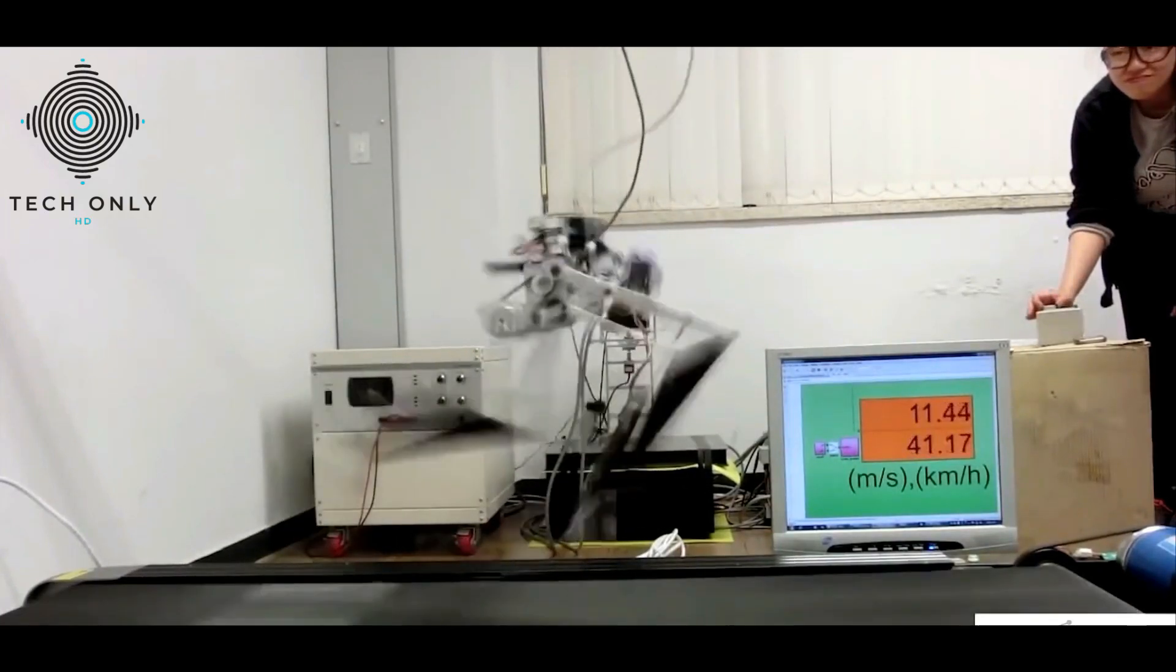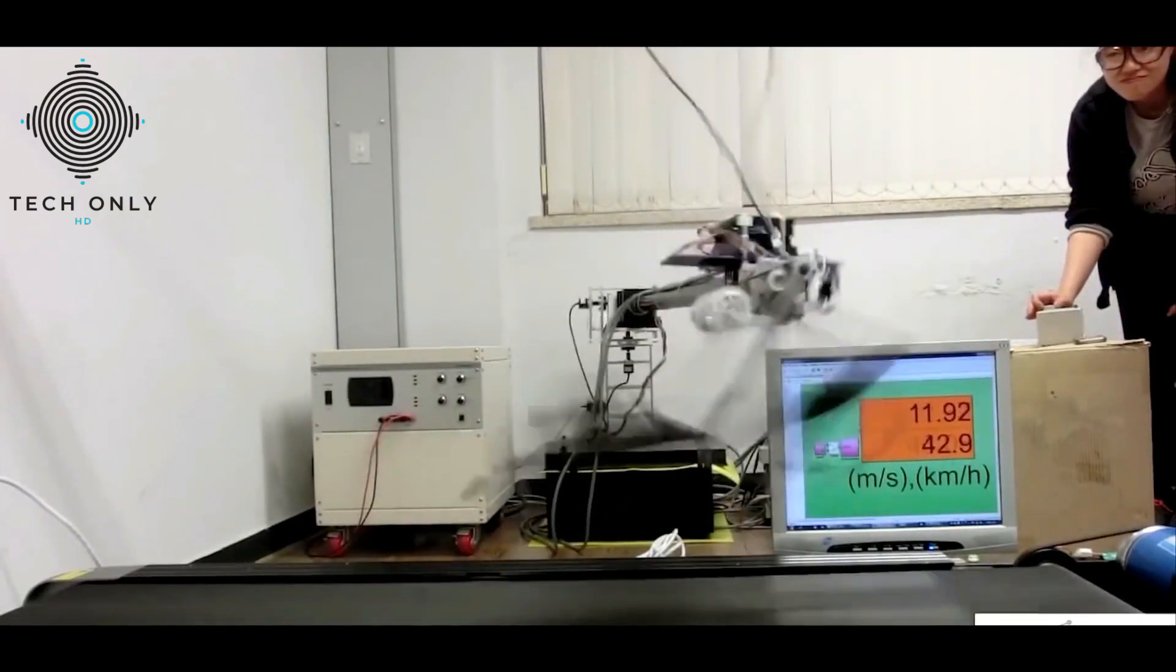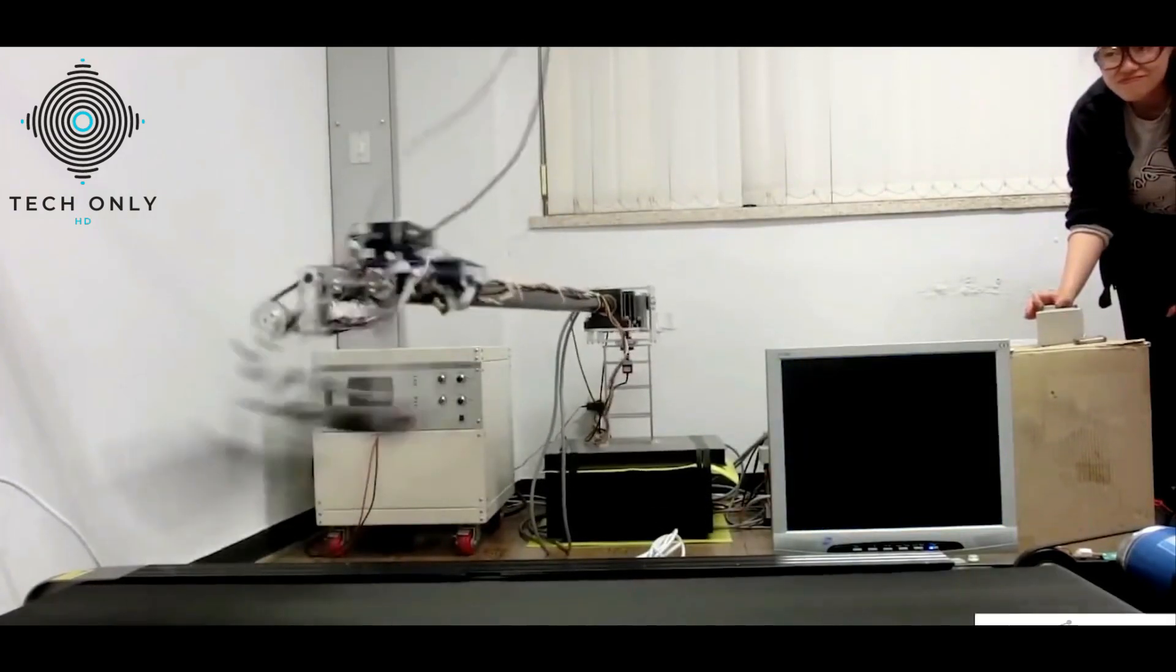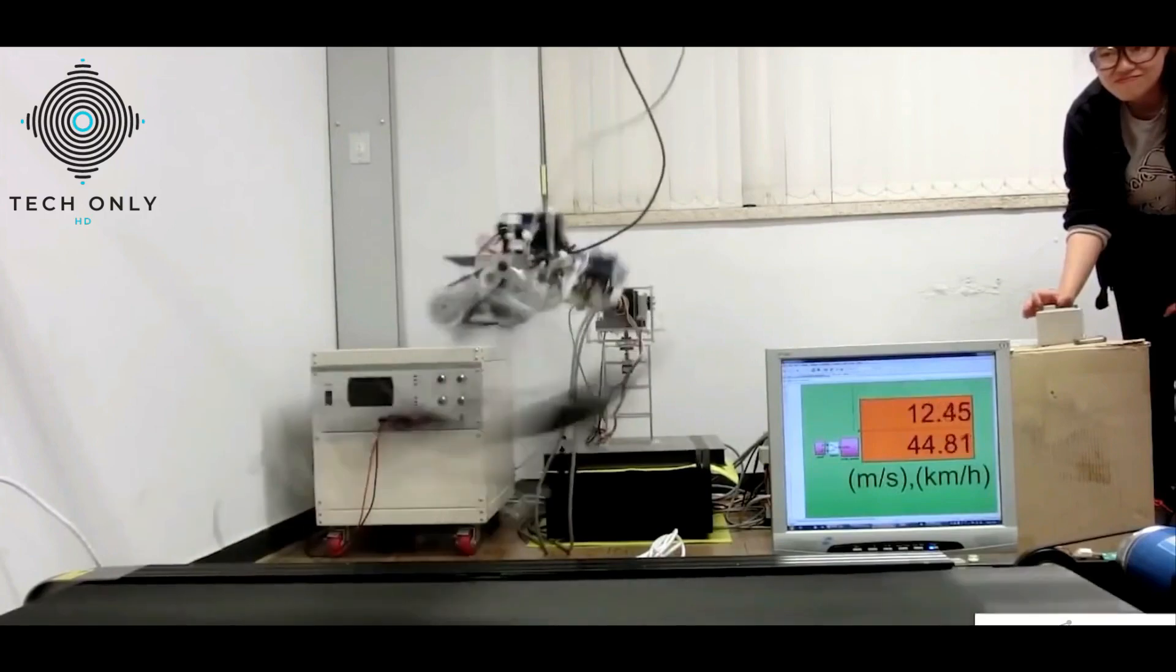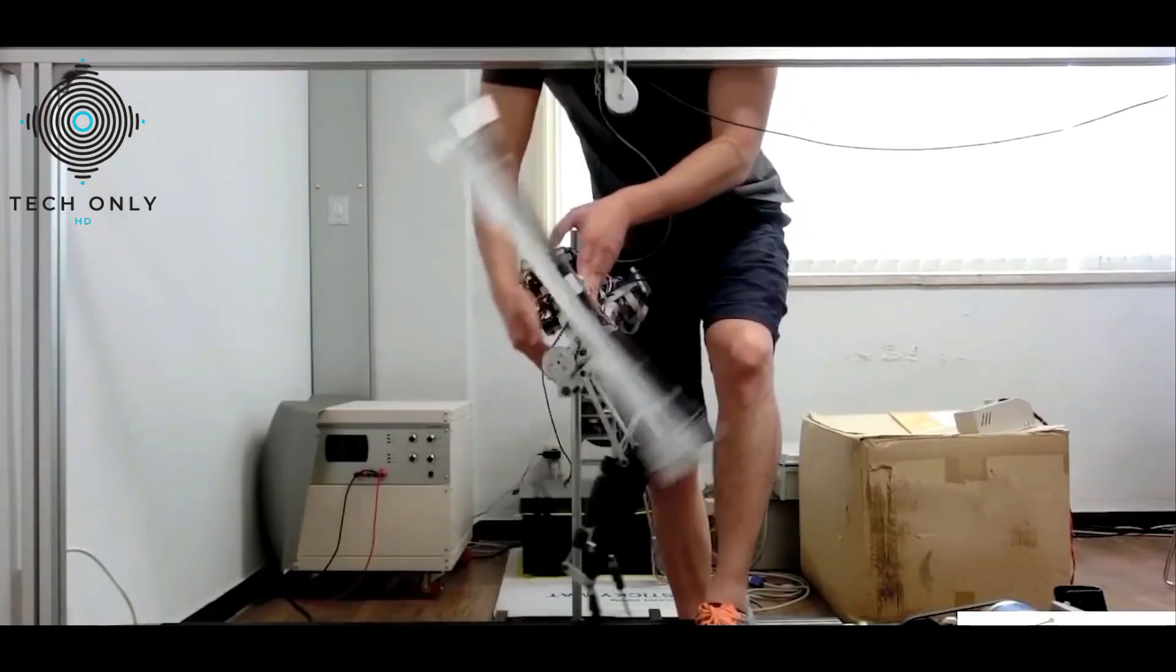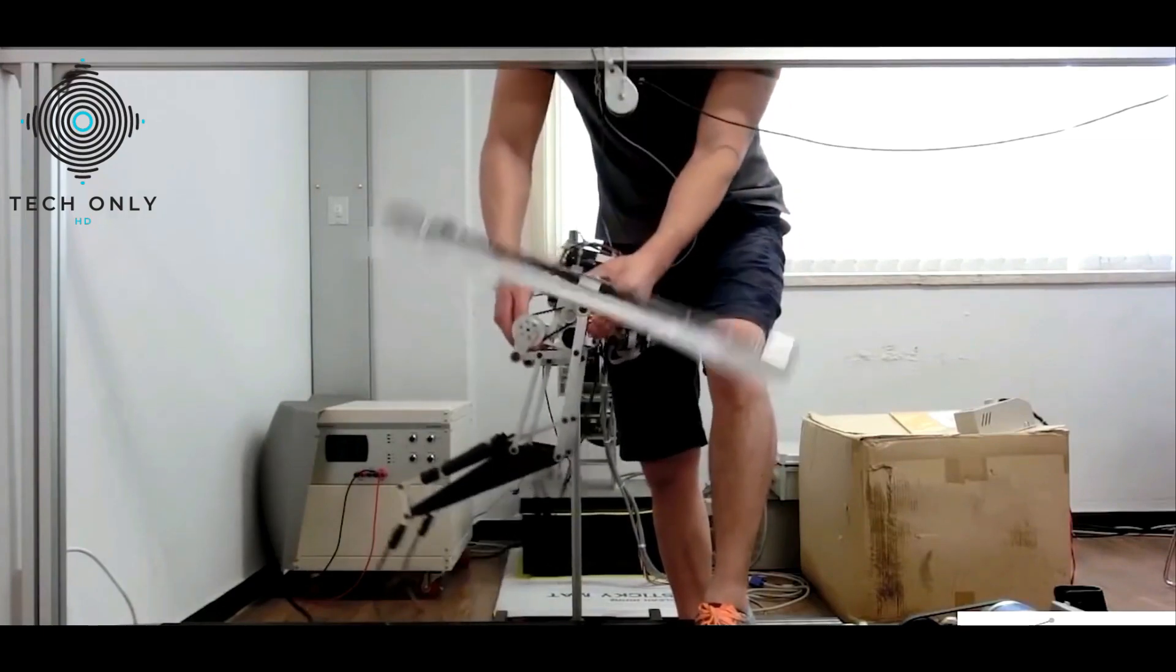In motion, the robot is capable of running at speeds that exceed 28.5 miles per hour. Currently, the device is tethered to the power and control unit. However, the research team hopes to upgrade the robot to enable free-roaming ability.